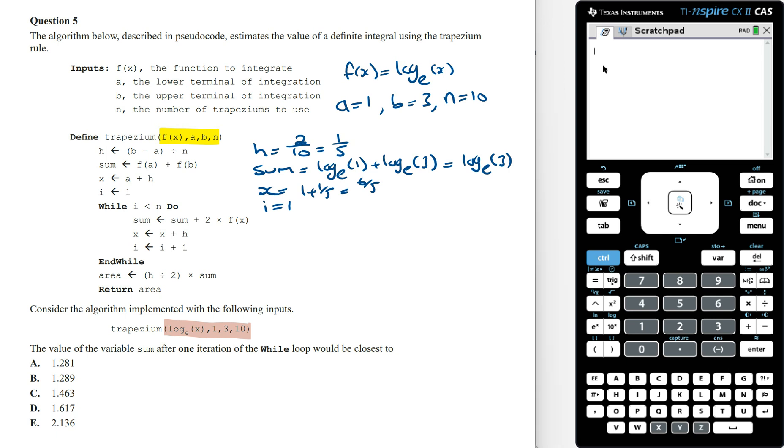The variable sum equals the previous sum, which was log_e(3), plus 2 times f(x), which is 2 times f(6/5). This is the first value of the variable sum after its first iteration. We can now plug this into the calculator.